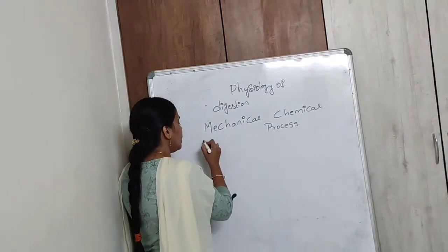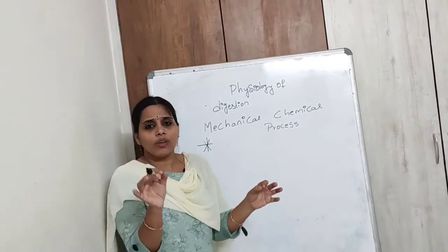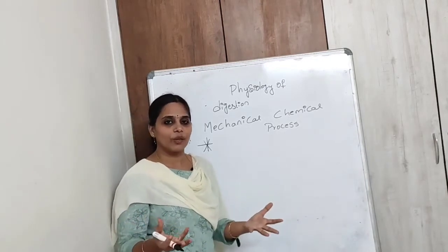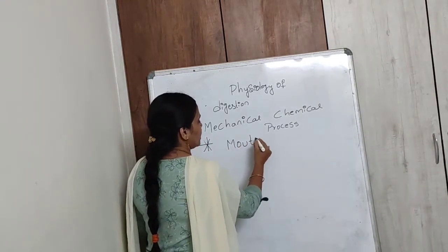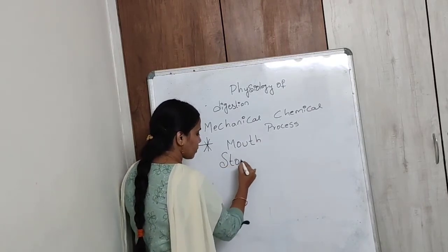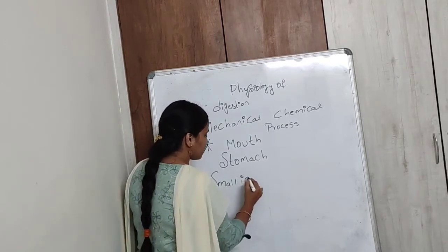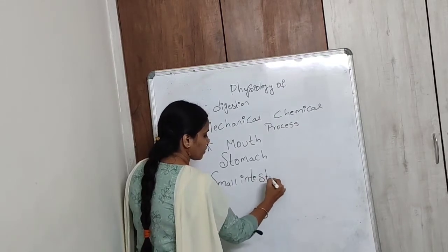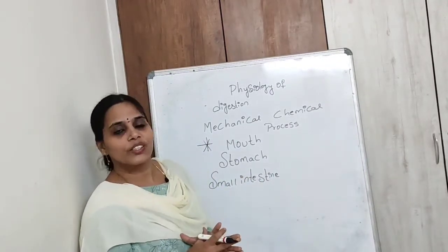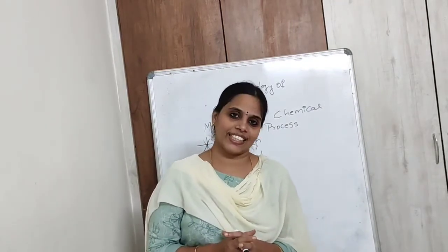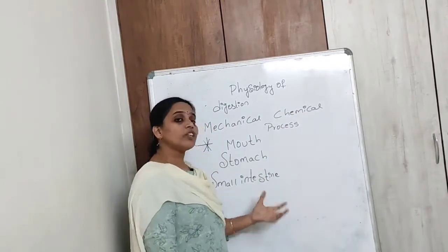Remember, the breakdown of complex substances into simple substances takes place in only three parts of the alimentary canal — the mouth, the stomach, and the small intestine. Let's discuss what type of mechanical and chemical processes take place in each of these three parts.